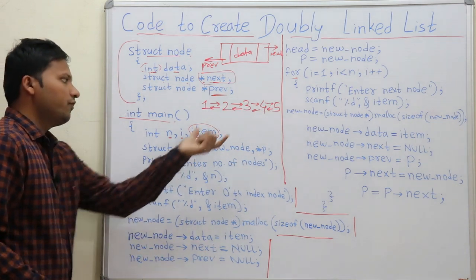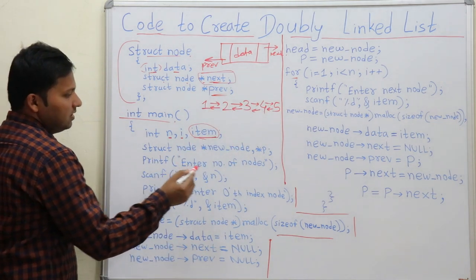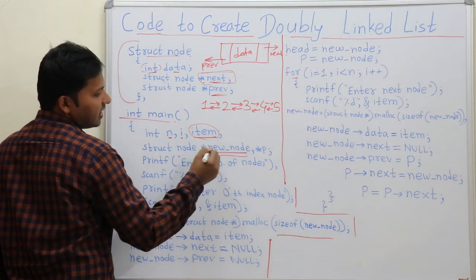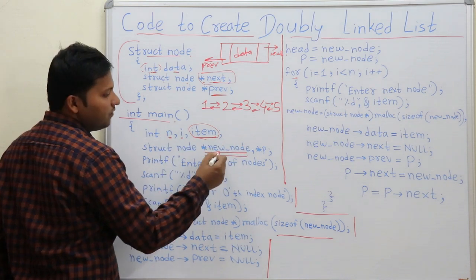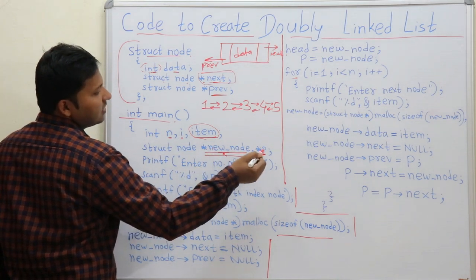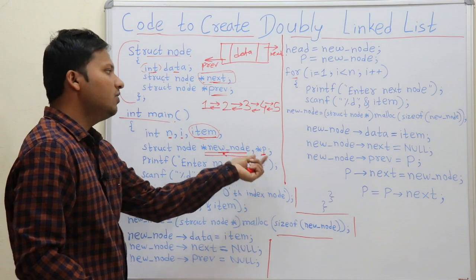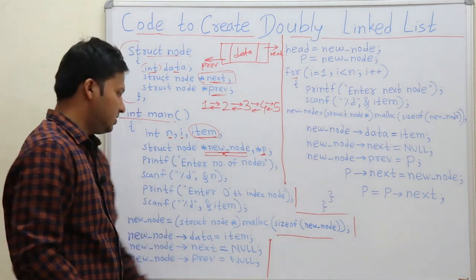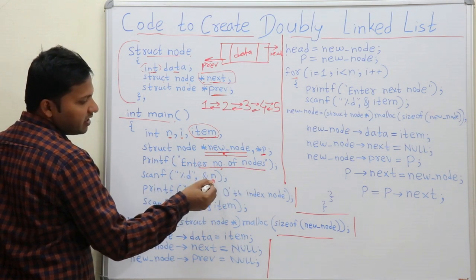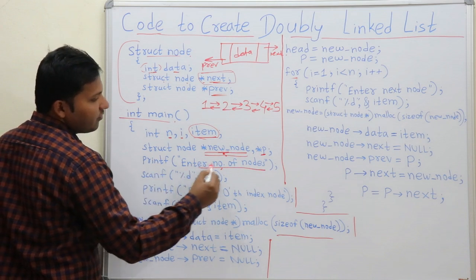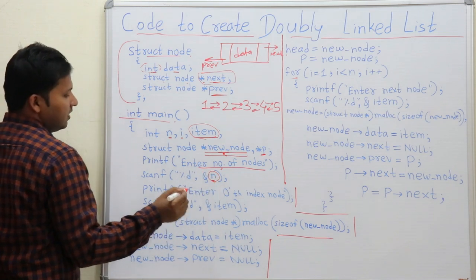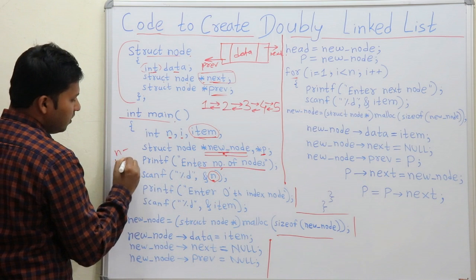For this doubly linked list we take some pointer variables. We declare struct node star new node — every time we create a node we store it inside this variable named new node — and star p, which is the pointer that traces through the doubly linked list. We get the number of nodes from the user inside the variable n.